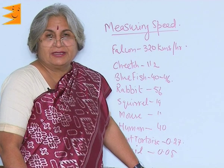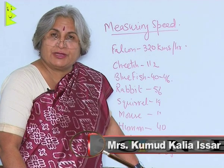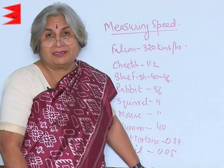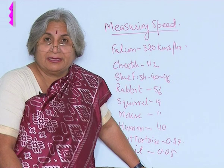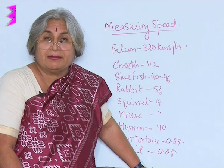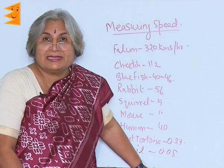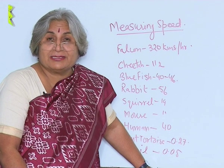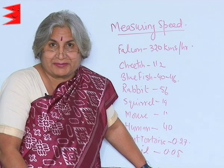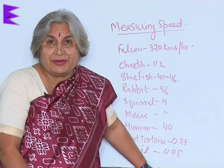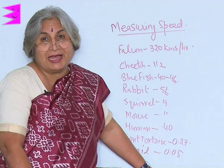Vehicles have speedometers with the help of which we can measure speed, but speed has also been measured for other things. Rockets that launch satellites into the orbit of the earth gain about 8 kilometers per second speed, while in the case of a snail it is only 8 centimeters. So from here you can understand what is fast and what is slow and how speed has been measured.